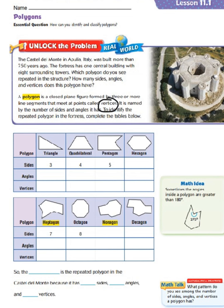To identify the repeated polygon in the fortress, complete the table below. Going across the top of our table, we see different polygons: a triangle, a quadrilateral, a pentagon, and a hexagon. Our triangle has three sides. Our quadrilateral has four sides. Our pentagon has five sides.